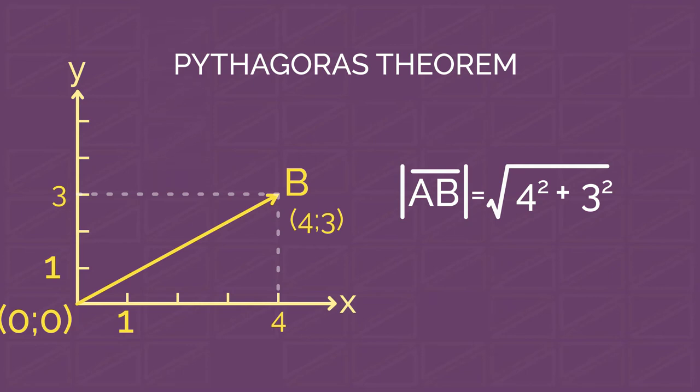Generally speaking, if vector AB has coordinates (a,b), then its magnitude can be found using this formula.